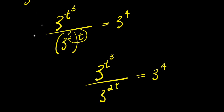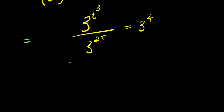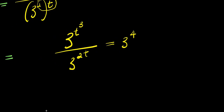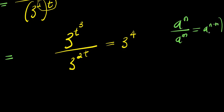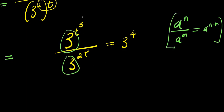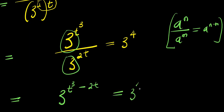Now that the bases are the same, we are going to apply the identity: if you have a to the power of n divided by a to the power of m, this equals a to the power of n minus m. So since the bases are the same, I am going to subtract the exponents, giving me 3 to the power of t cubed minus 2t, and this equals 3 to the power of 4.